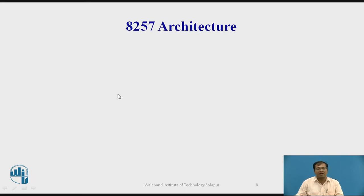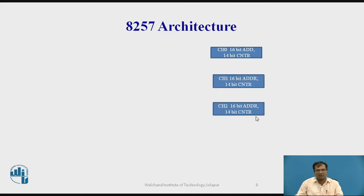Let us see the architecture of 8257. It is having four channels like CH0, 16-bit address register, 14-bit counter register. Similarly, channel 1, channel 2, channel 3. These are the four channels.